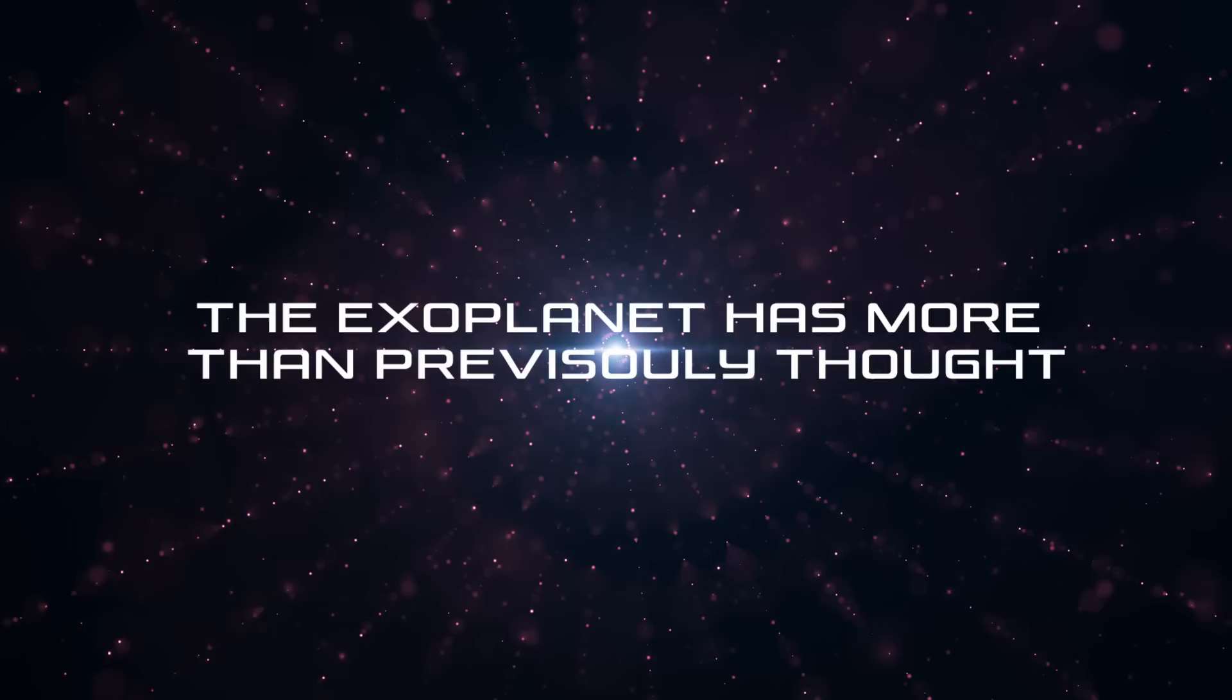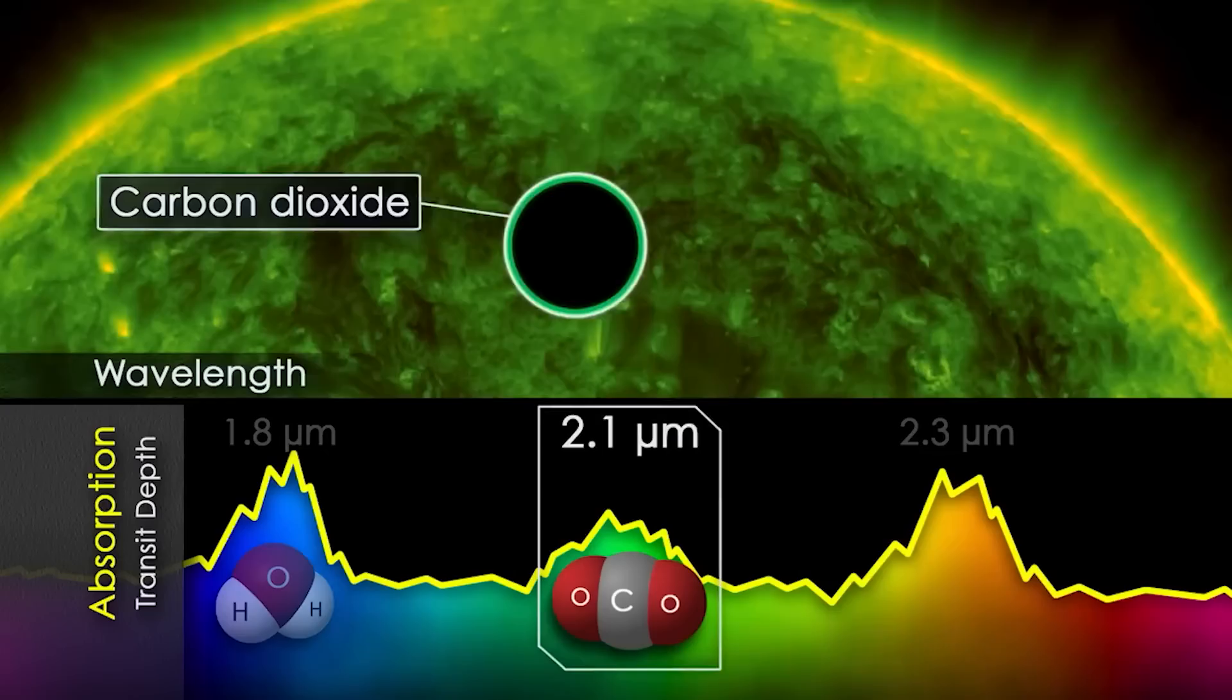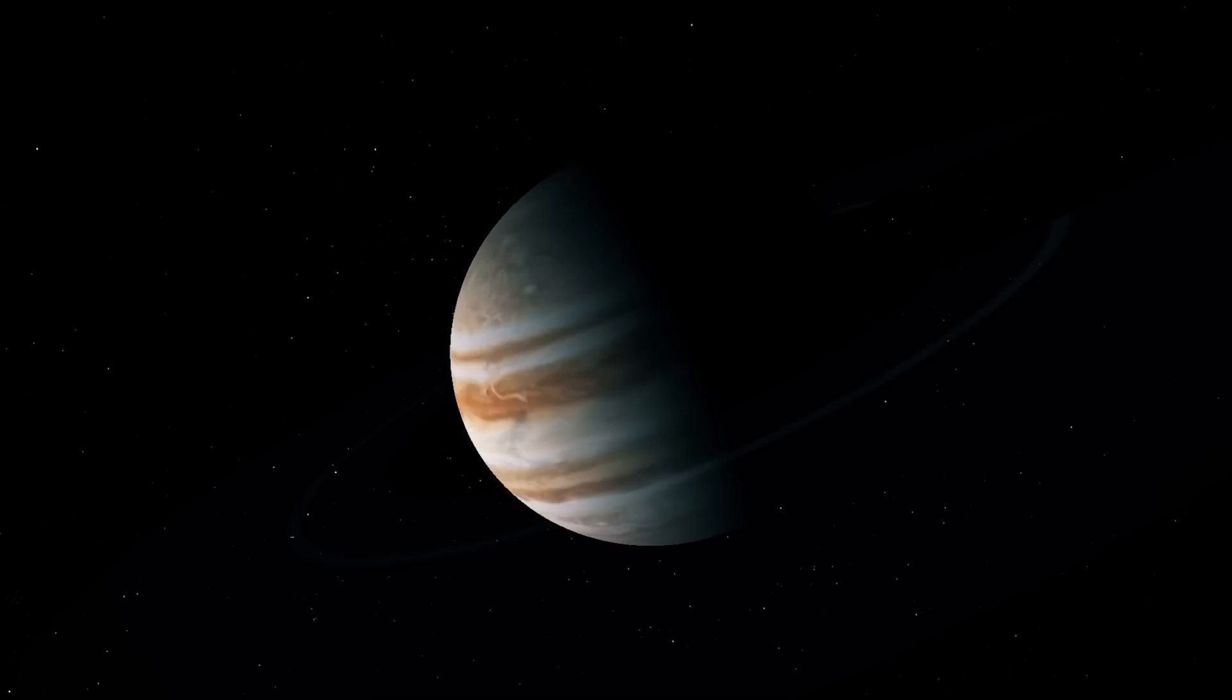As previously mentioned, earlier observations from other telescopes had shown the presence of sodium, potassium, and water vapor in the exoplanet's atmosphere. The discovery of carbon dioxide on this exoplanet is the second discovery of elements in the atmosphere of the WASP group of planets.